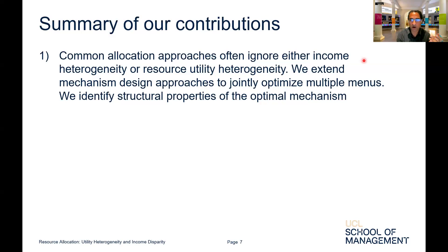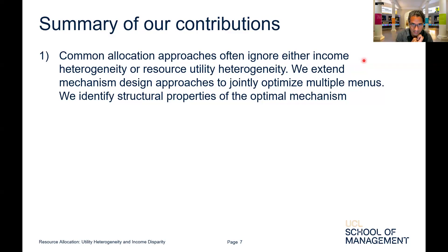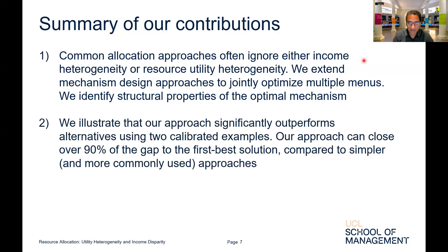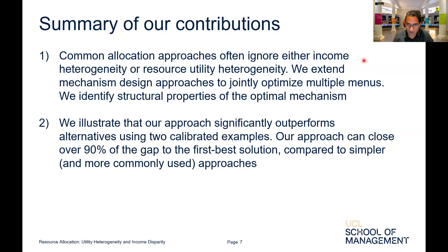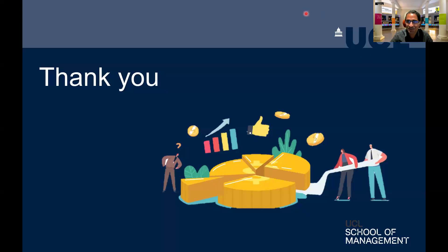In summary, common allocation approaches often ignore either income heterogeneity or resource utility heterogeneity. We extend mechanism design approaches to jointly optimize multiple menu approaches to handle both sources of heterogeneity, and identify structural properties detailed in the paper. Using two practical examples, we show that this is not just theoretically useful — we are able to close over 90% of the gap to the first-best solution relative to more commonly used simpler approaches. Thank you very much for your attention.